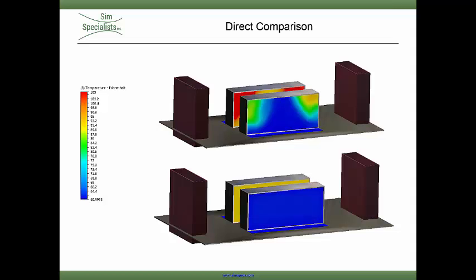The hot aisle containment increases the room's efficiency by 25%, in this case reducing the operating cost by over $40,000 per year.